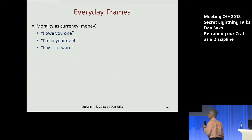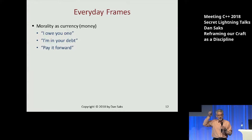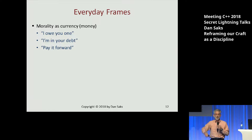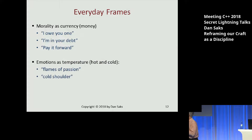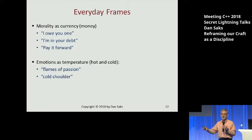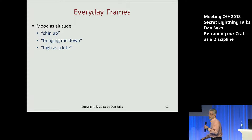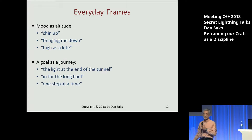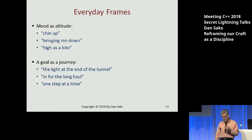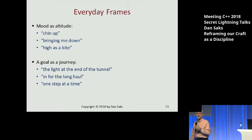Let me give you a couple of examples. Morality is a very intangible commodity — it's hard to deal with in the abstract. So what does our mind do? We form an analogy with currency. If I do you a favor, you will say 'I'm in your debt' or 'I owe you one.' That's the way we traffic in these concepts. Emotions as temperature: we talk about flames of passion or giving somebody the cold shoulder. Mood as altitude: keep your chin up, I'm high as a kite. Or goal as a journey: we talk about the light at the end of a tunnel, I'm in for the long haul. These are all frames — they're metaphors. It's the way we deal with these concepts.